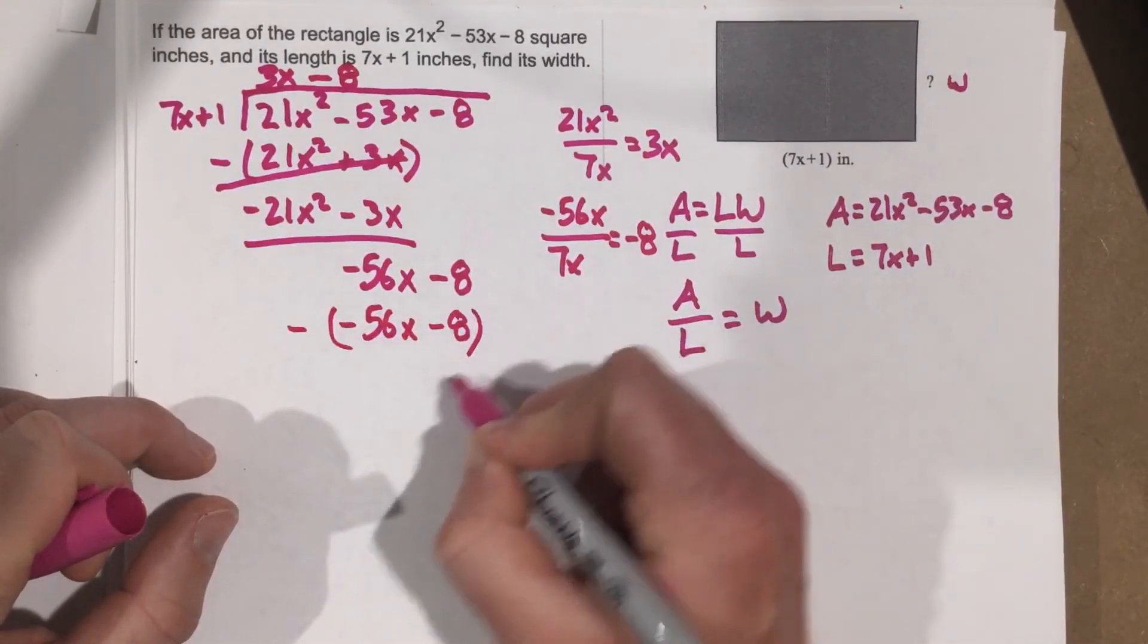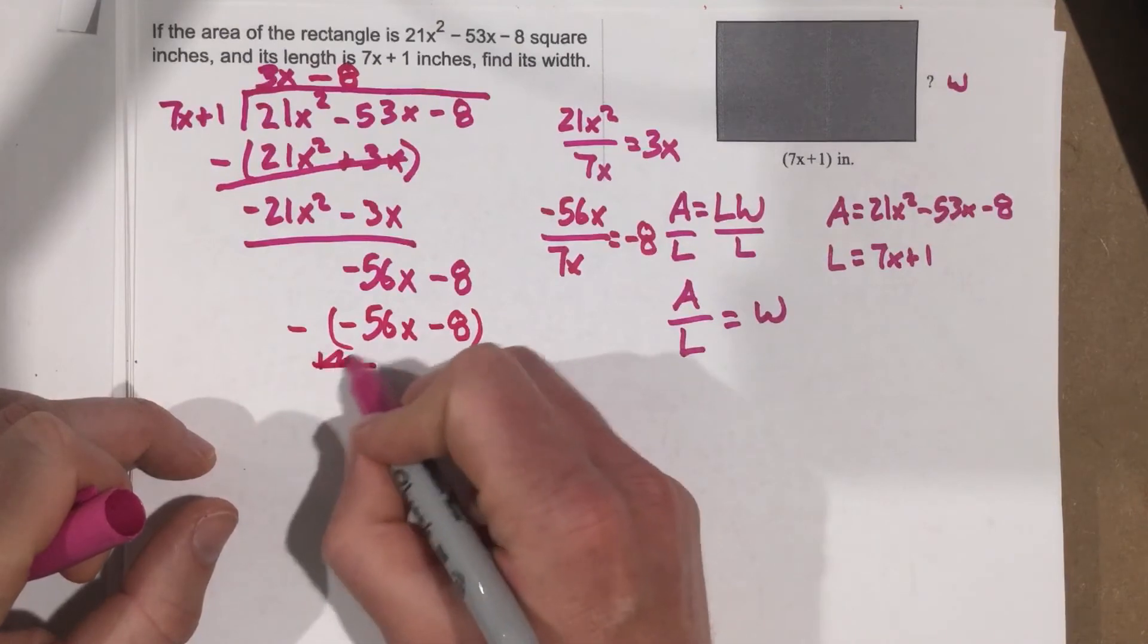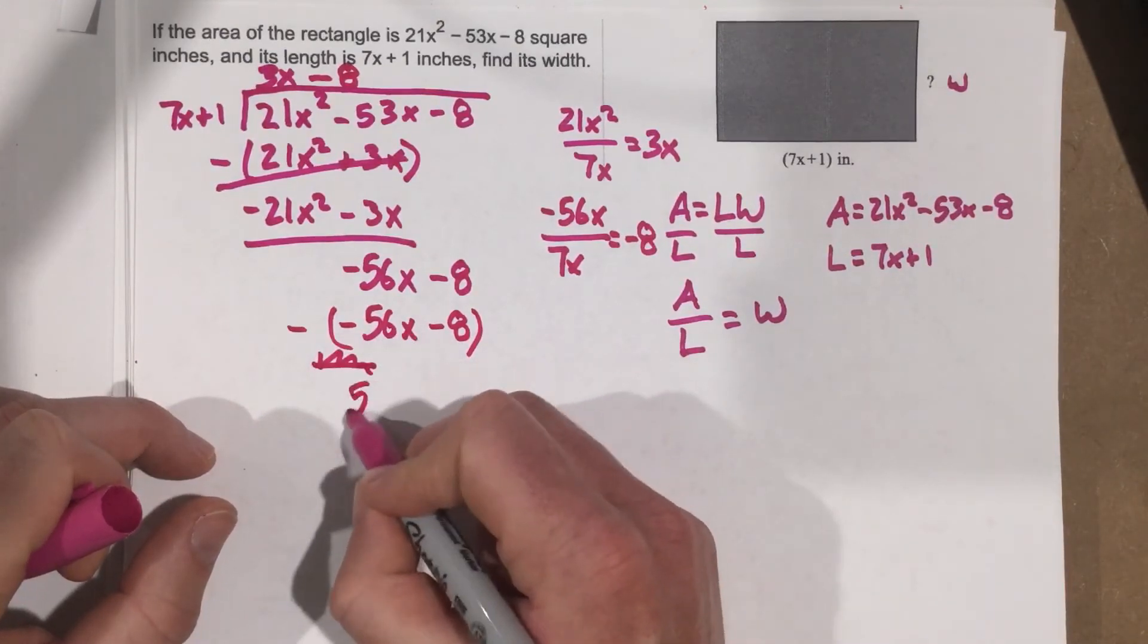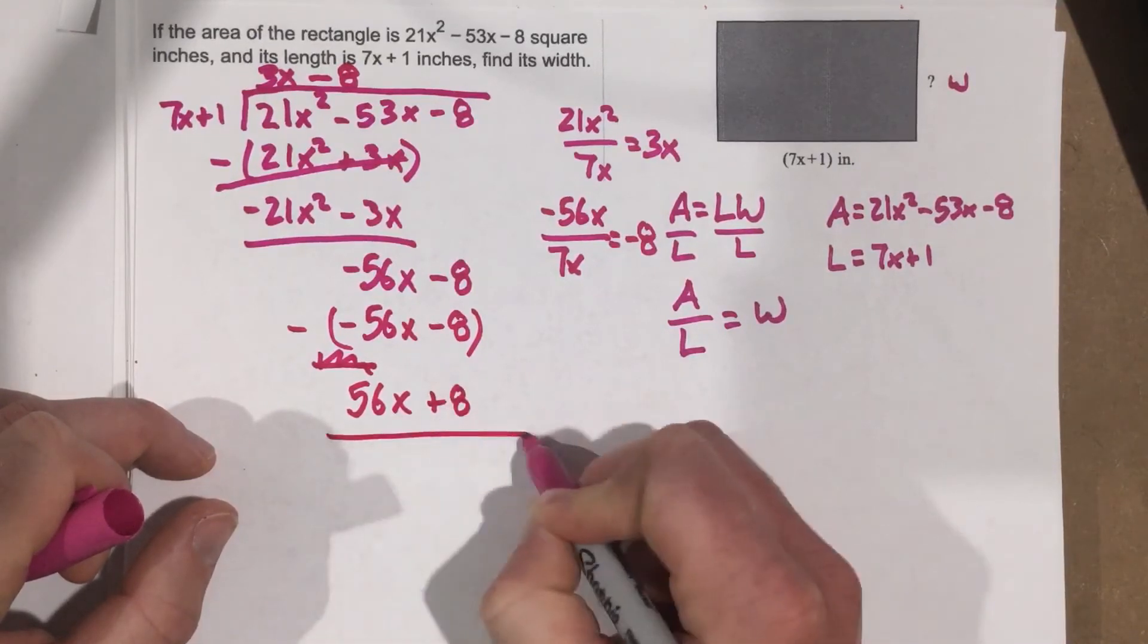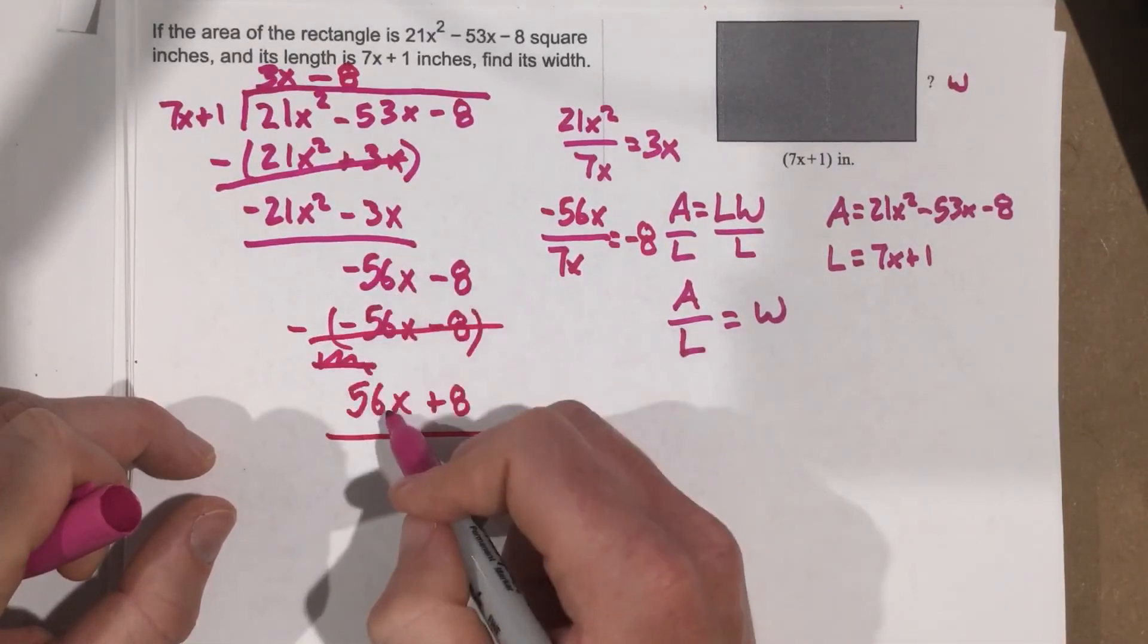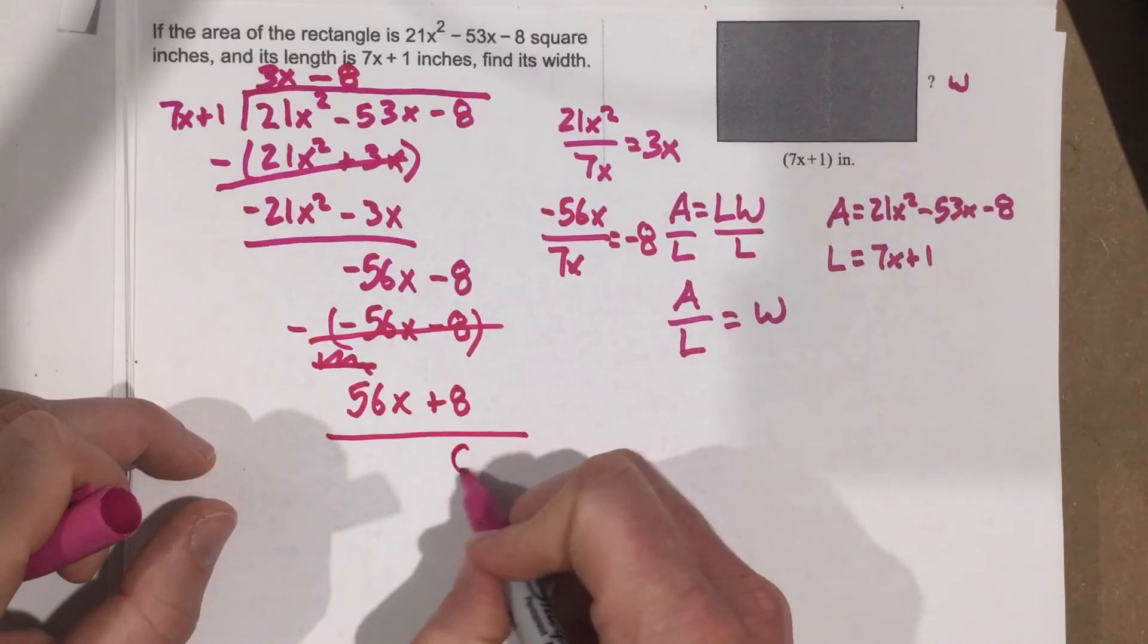We're going to subtract those. Distribute the negative, we get 56x plus 8. We're going to add this to this, and this, and this gives you a remainder of 0.